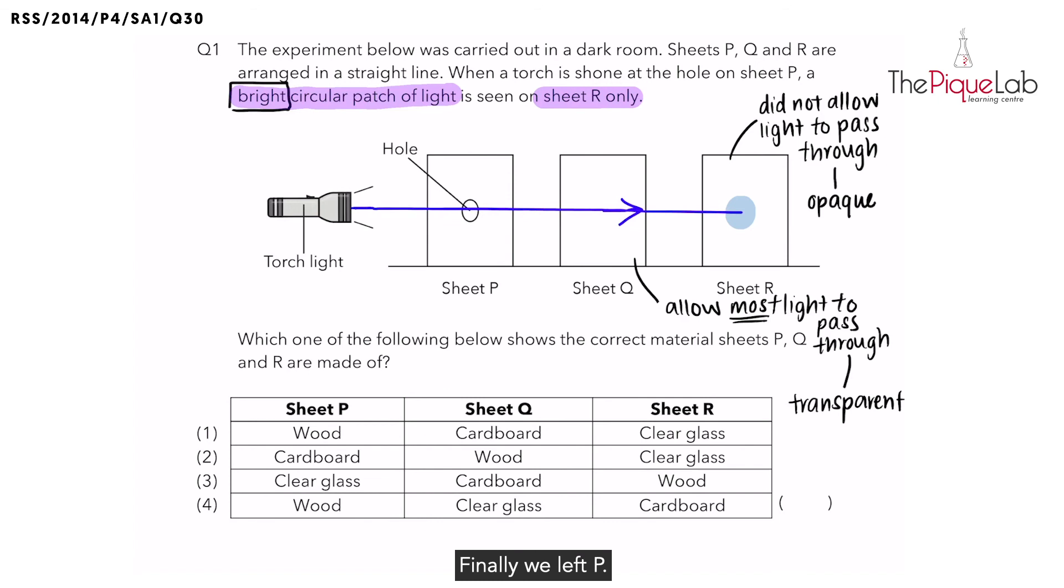Finally, we have P. Over here for P, you notice that there is a hole in the middle and the hole allows light to pass through. And more importantly, what is the shape of light that we see on R? We actually see a circular patch of light. So why a circle? Why not a rectangle? It's because the circular patch of light actually represents the light that was only able to pass through the hole in P. The hole allows light to pass through.